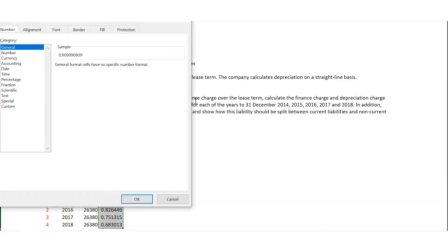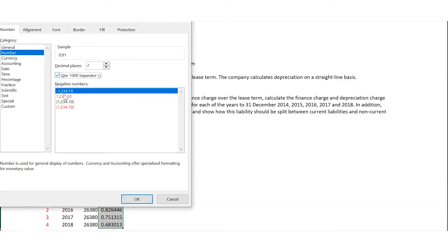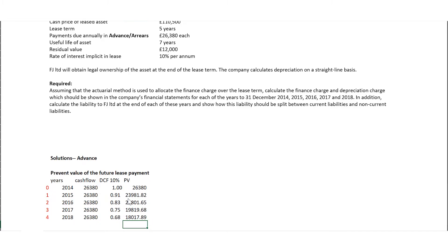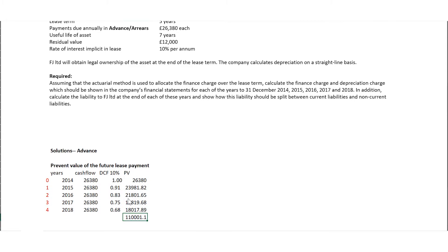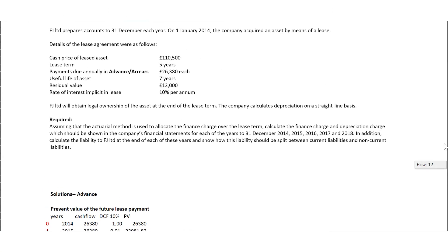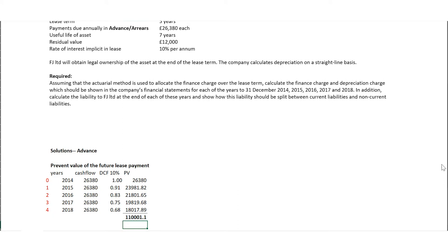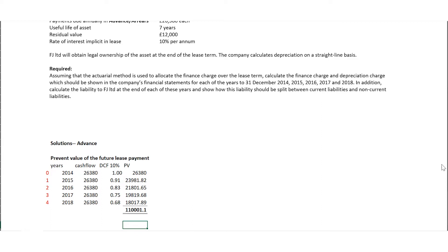I'm going to abbreviate these figures to two decimal places with some formatting. The PV is this multiplied by that — it's a multiplication, not addition. Bringing these figures down, we have the PVs. Therefore, to sum this all up, we get the total PV figure — that's the PV of the future lease payment. If you look at the cash price given to us, it's almost close to 110,000 — just slightly off by about 500. But we've calculated the PV, and this is in line with the required standard.